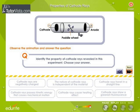You can see the movement of the paddle wheel. Which property of the cathode rays is depicted here? Choose from the options given below.